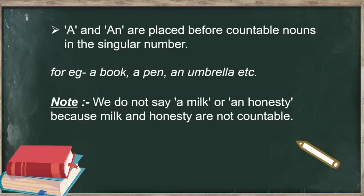A and an are placed before countable nouns in the singular number. For example: a book, a pen, an umbrella, etc. Remember, children, we do not say 'a milk' or 'an honesty' because milk and honesty cannot be counted — they are not countable.